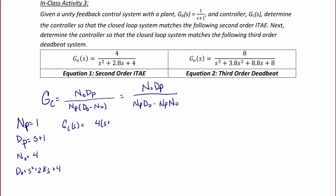over Np·D0, which is s² plus 2.8s plus 4, minus Np·N0, which is 4.